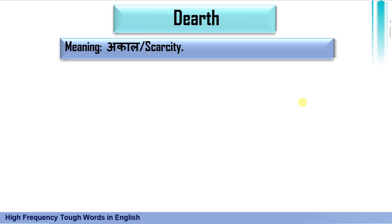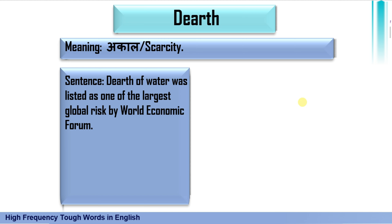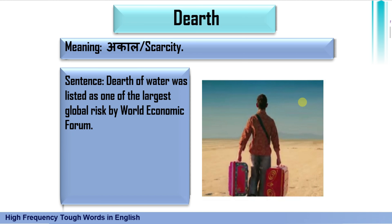The next word is 'dearth,' which means akal or scarcity. The sentence I have formed: dearth of water was listed as one of the largest global risks by the World Economic Forum. This was a newspaper headline — dearth of water means scarcity, paani ka akal, considered one of the largest global risks.